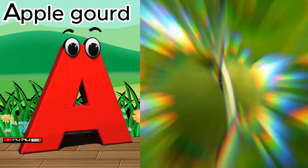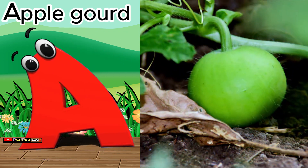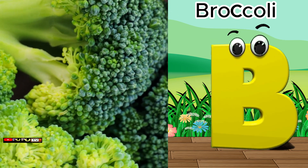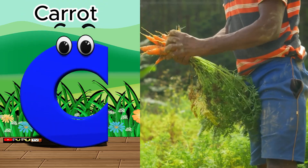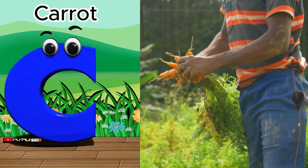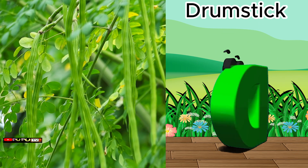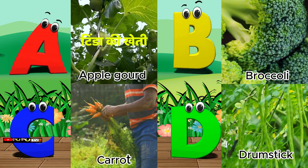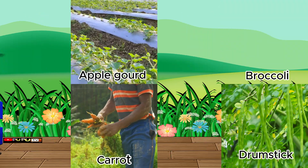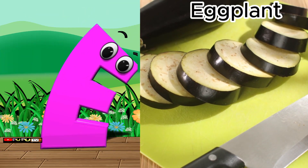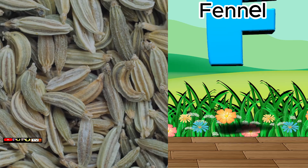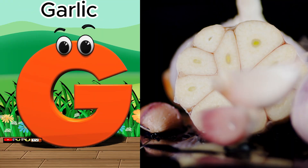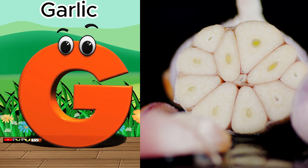A is for apple gourd. B is for broccoli. C is for carrot. D is for drumstick. E is for eggplant. F is for fennel.